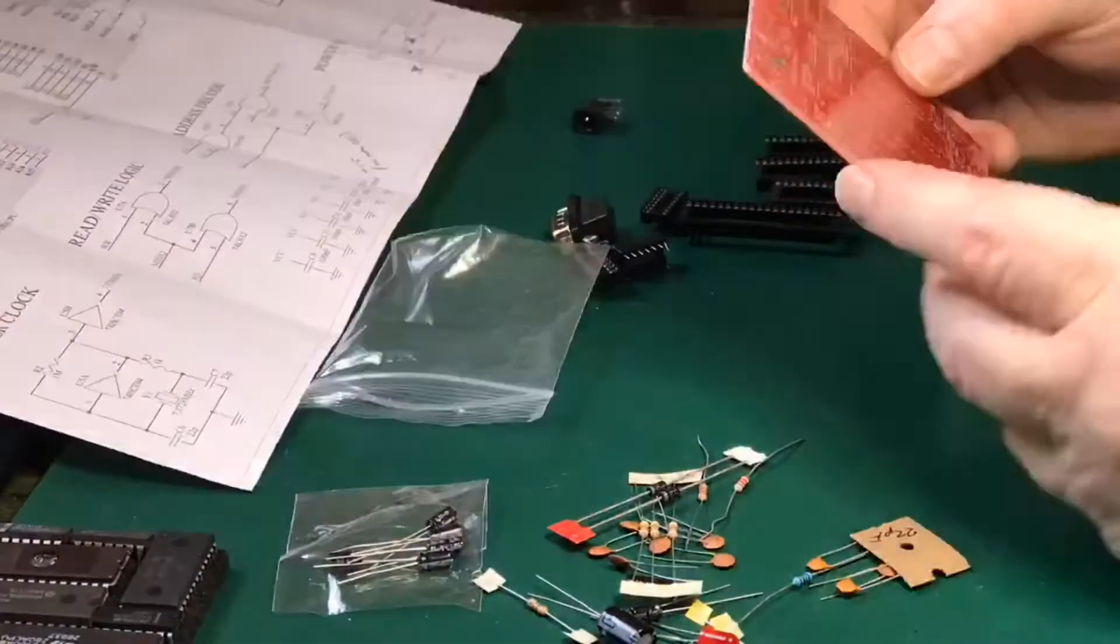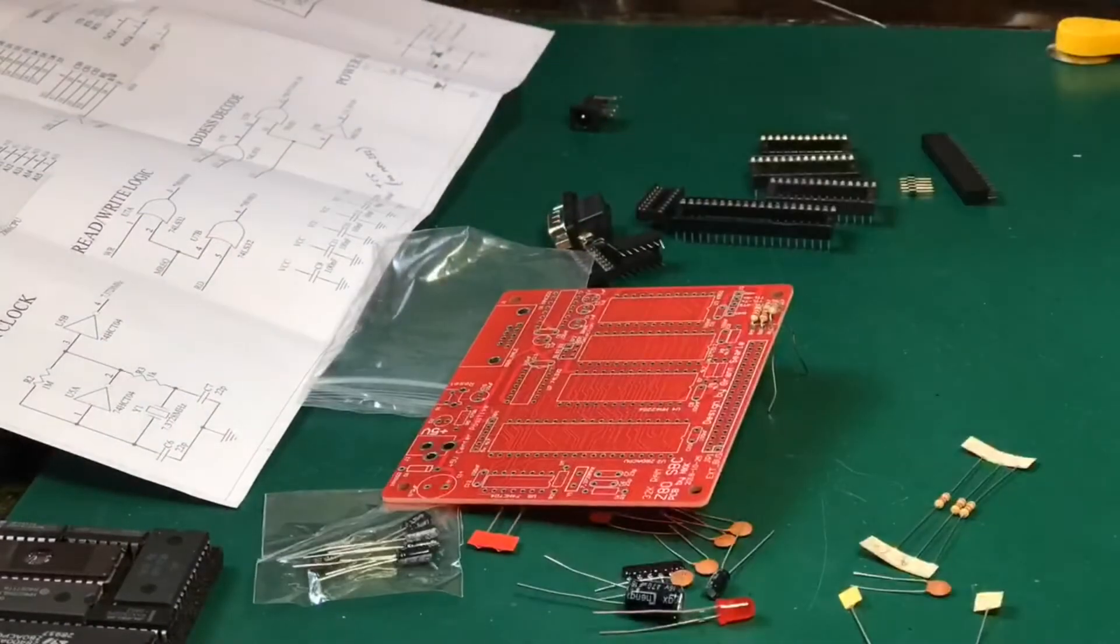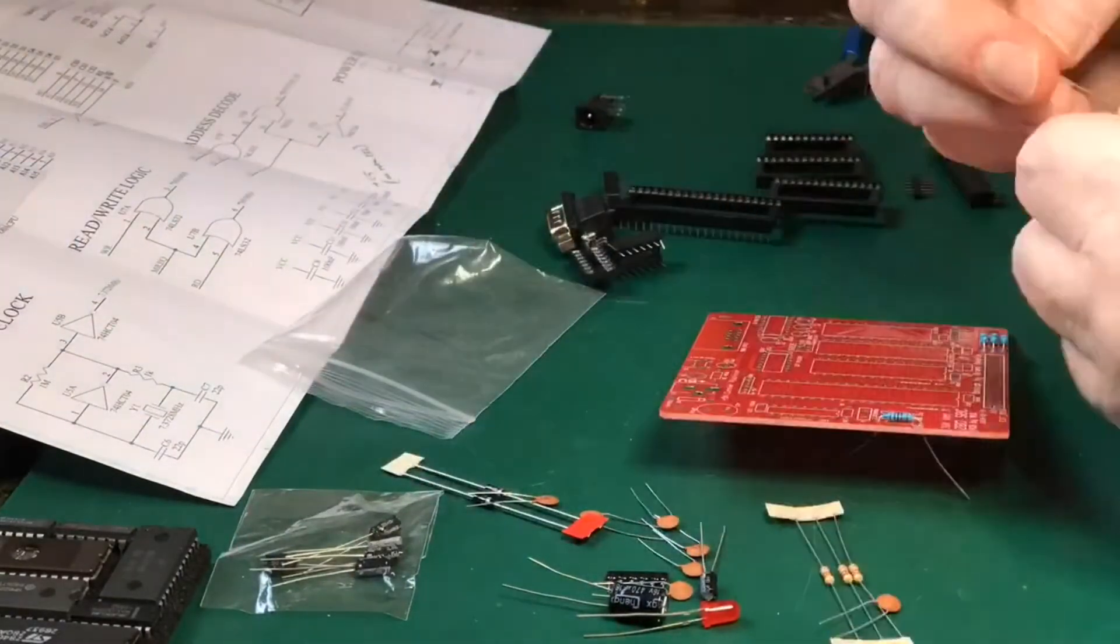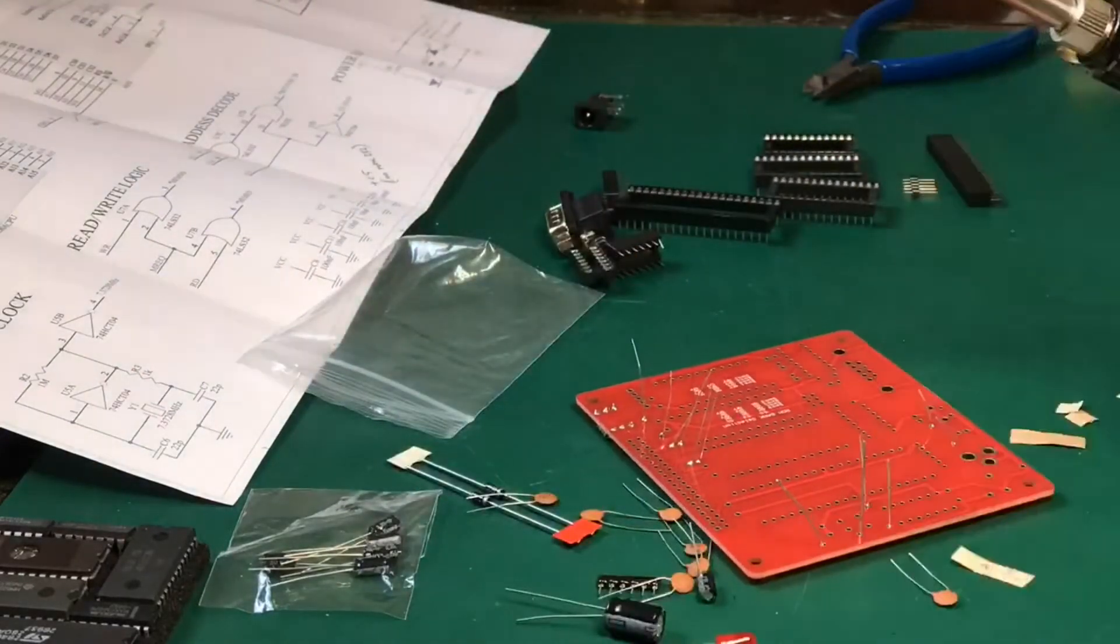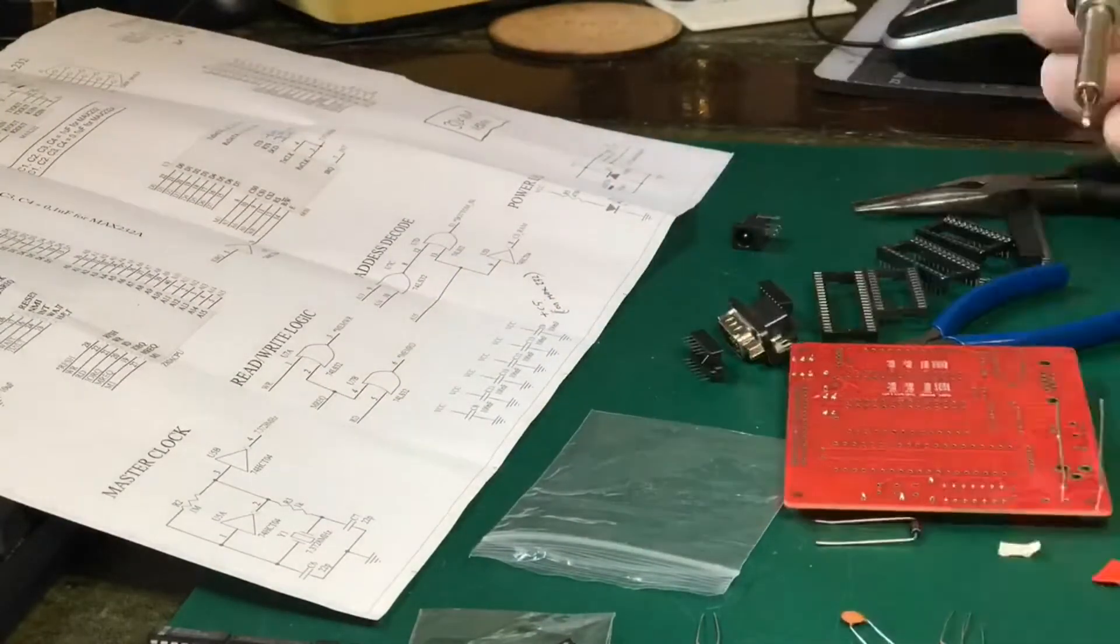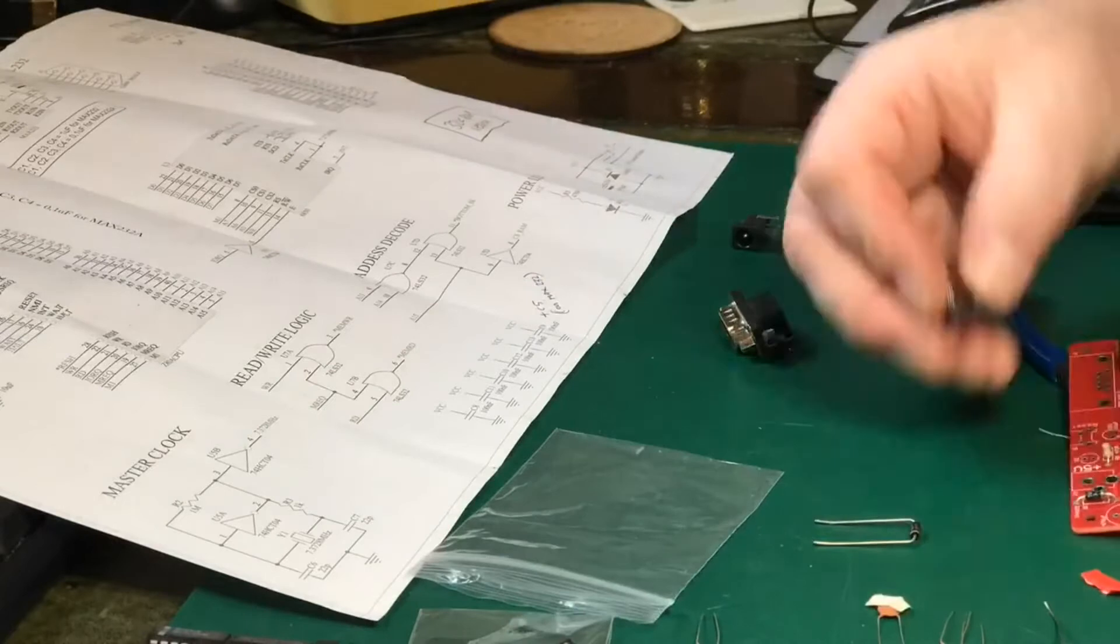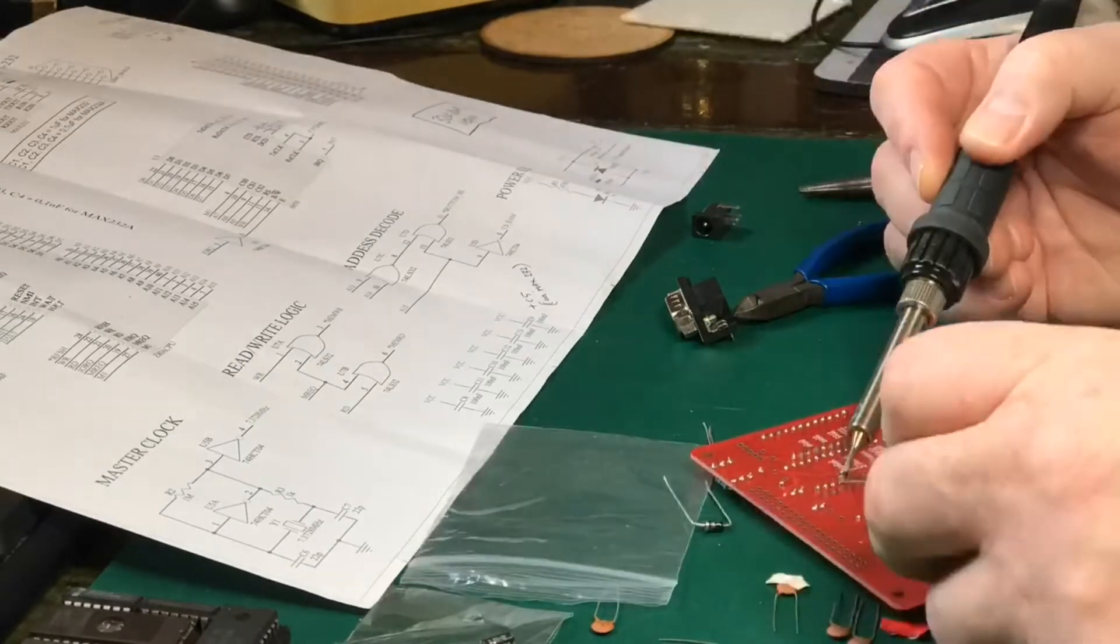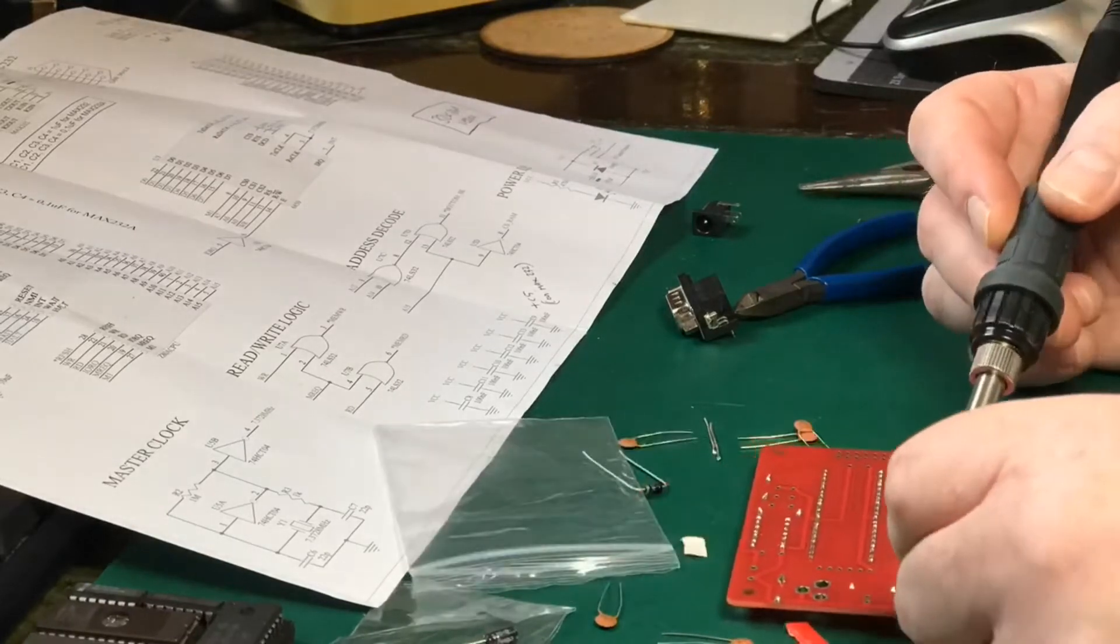I obviously won't subject you to the full assembly minute by minute, I'll speed it up for you. The first thing to put in of course are all the resistors because they're the lowest profile on the board, so it's nice and easy to sit the board flat and solder them all up and crop the leads off all in one go as a first step. This is fairly standard when you're assembling a board like this. Next I put the 1N4002 diode in and then all the IC sockets.